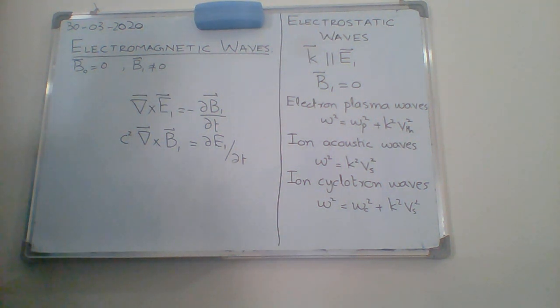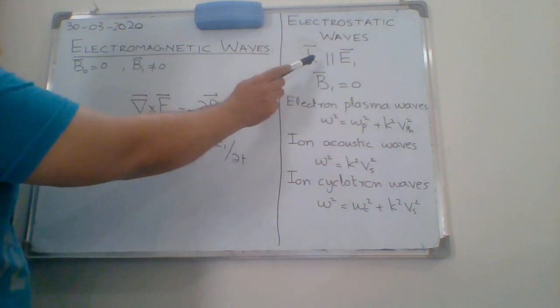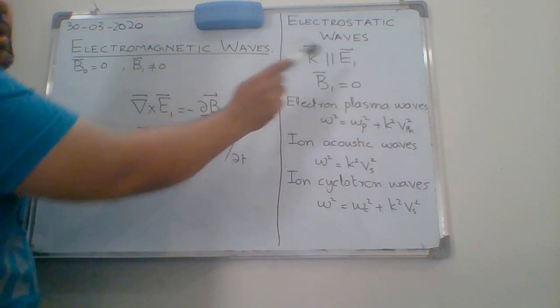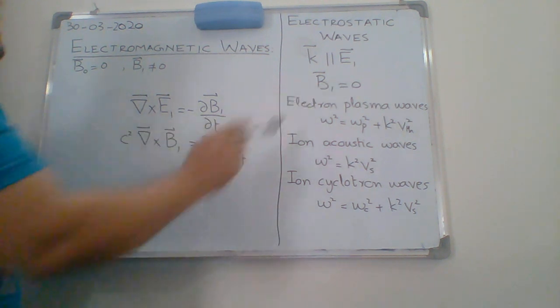Today I am going to talk about electromagnetic waves in plasma. As you have remembered, in the previous lectures we discussed electrostatic waves where we have the condition of k perpendicular to e1 and b1 equals zero.